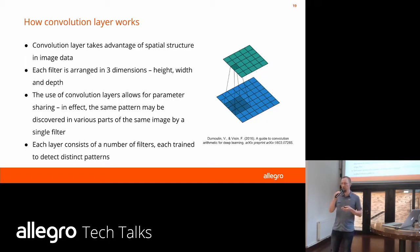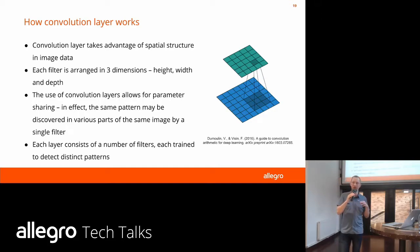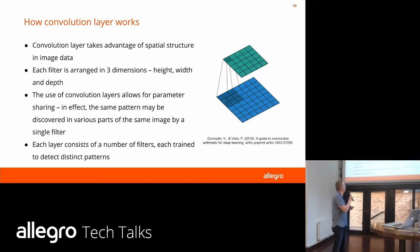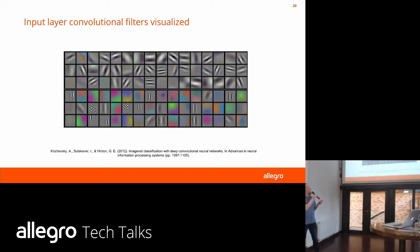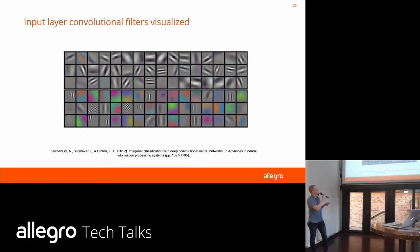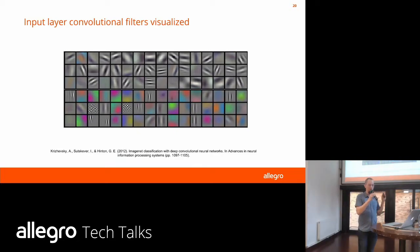Here you can see a visualization of the first layer convolutional filters from AlexNet. In the top row, those filters activate specifically on edges, both thick and thin, at various rotation angles. At the bottom, the filters are mostly sensitive to colour or neighbouring different colours. These are the basic visual features those networks are capable of finding and detecting.